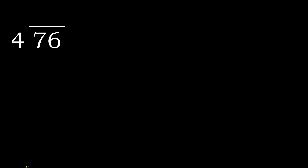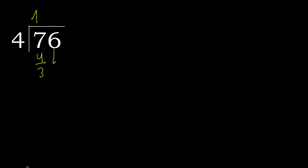76 divided by 4. Starting with 7: 4 multiplied by which number is nearest to 7 but not greater? 4 multiplied by 2 is 8, which is greater. 4 multiplied by 1 is 4, which is not greater. So 7 minus 4 is 3. Next, bring down 6 to get 36.